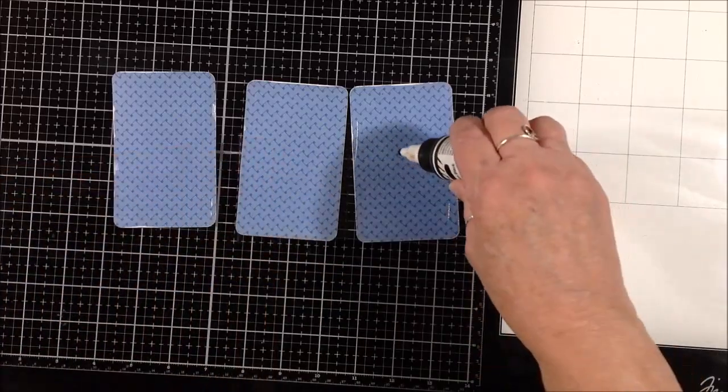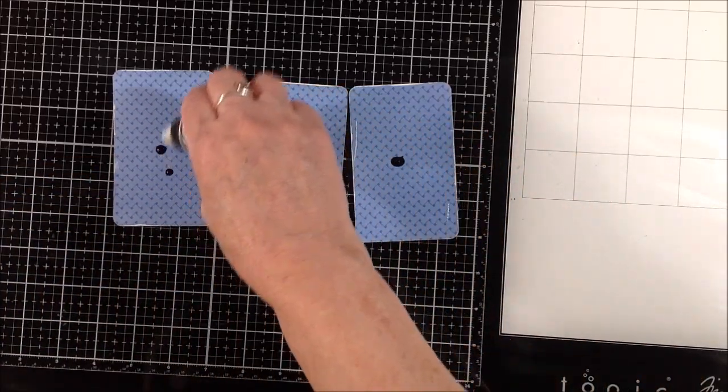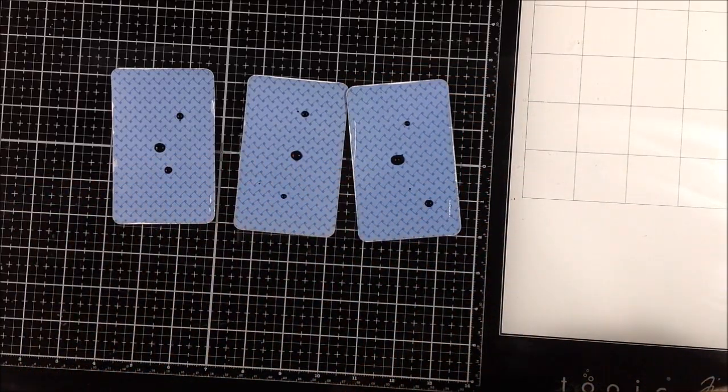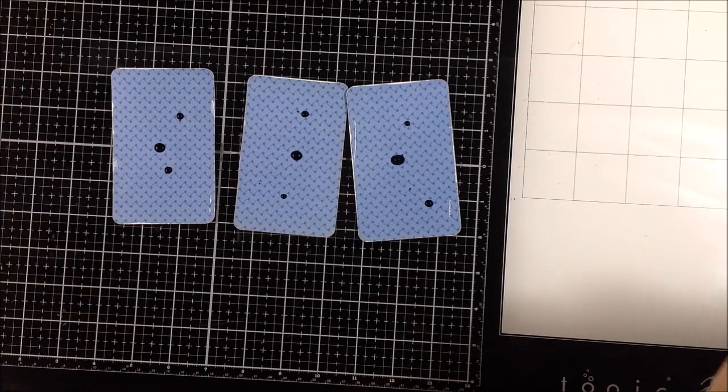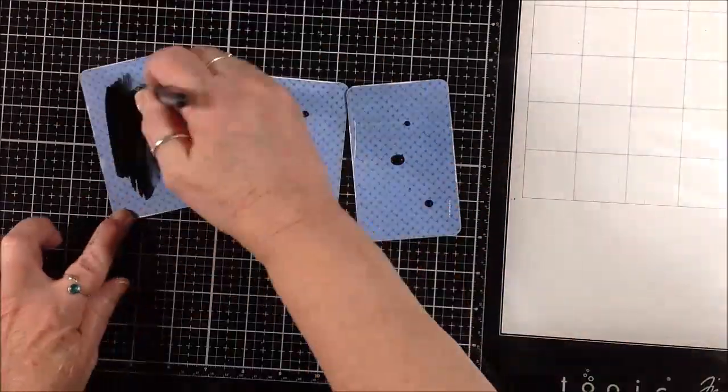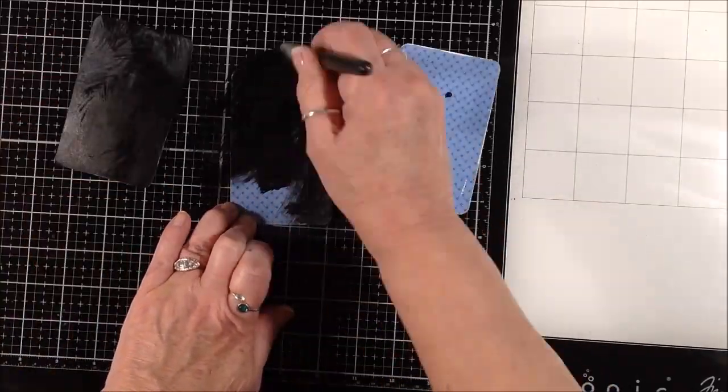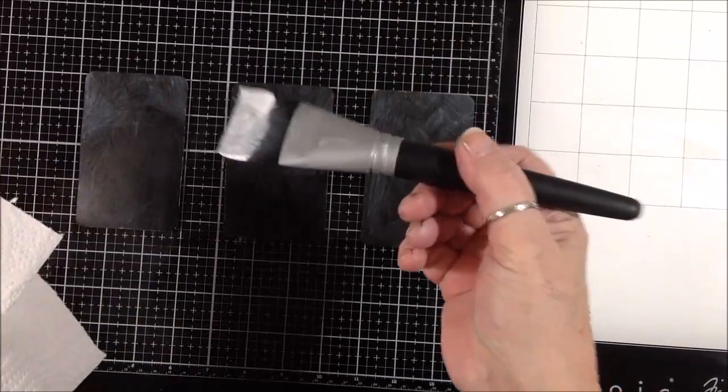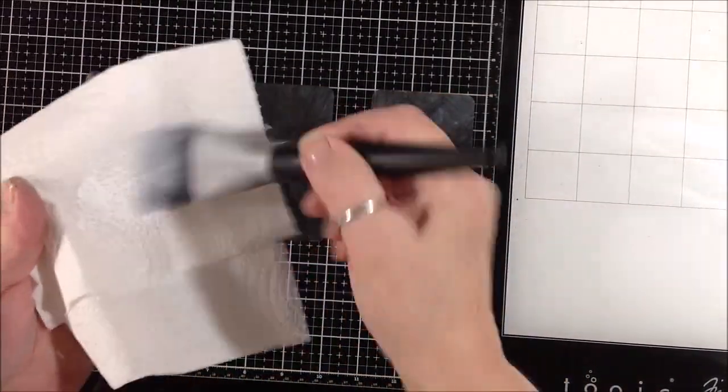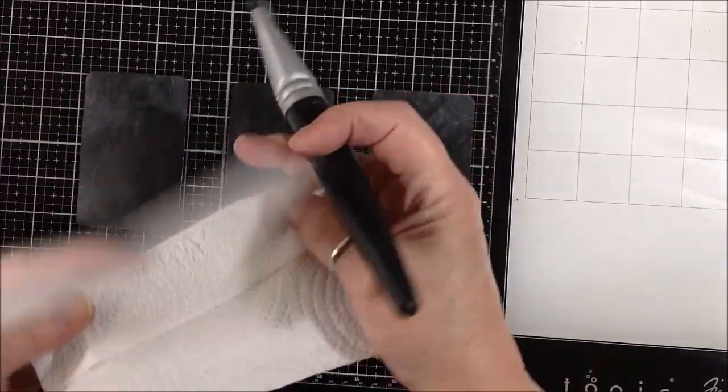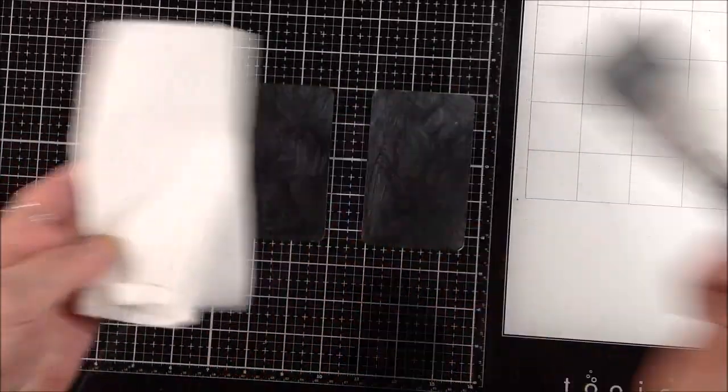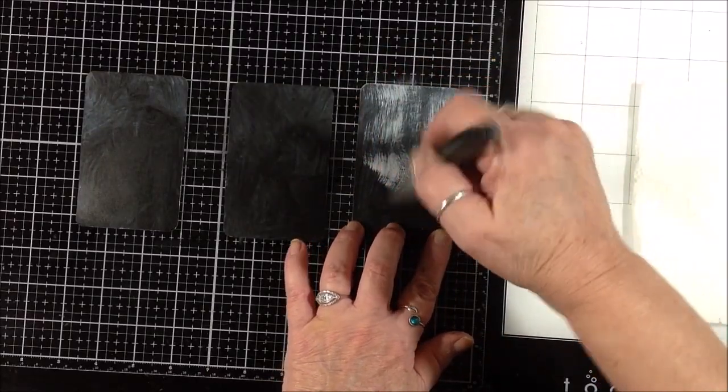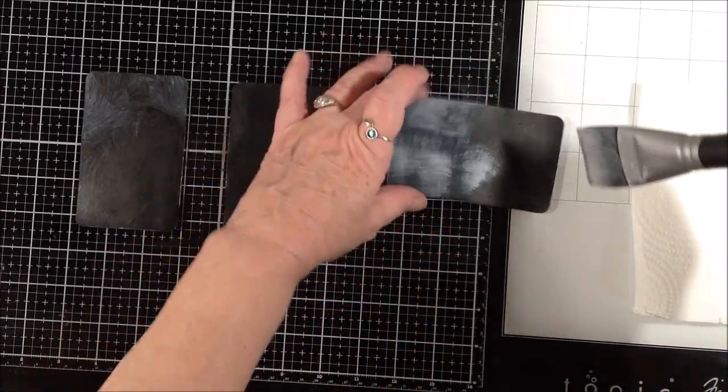This is the backs of the cards. I grabbed some carbon black Liquitex acrylic and I'm just going to scumble some paint on the backs. Then I have some gesso left in my brush, I'm going to wipe most of it out and just dry brush some gesso onto the back side of the cards to give some texture.